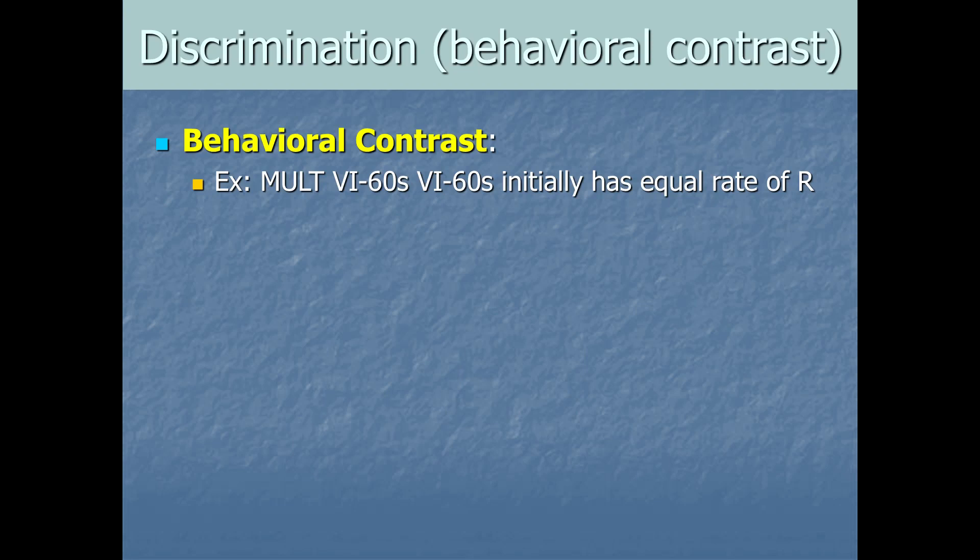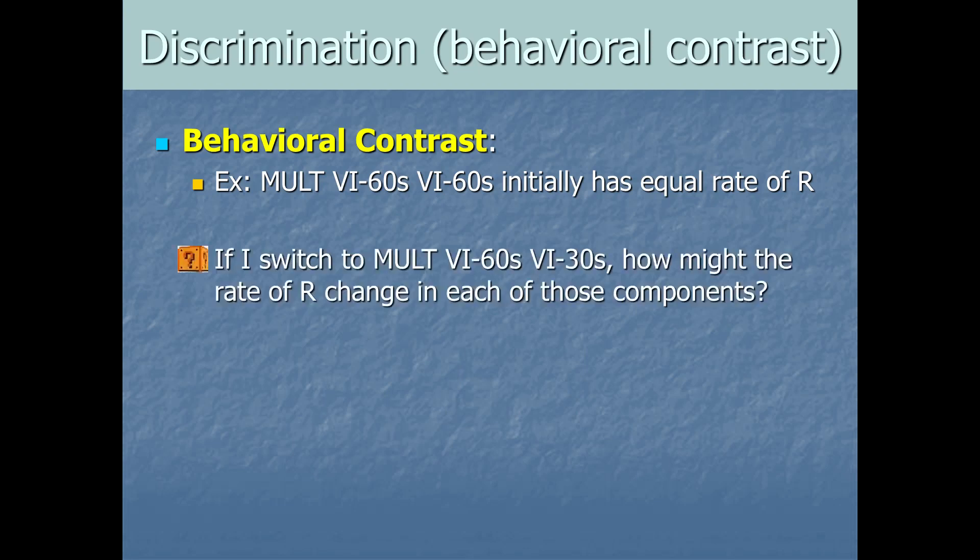We know from before that with a VI schedule like this, what kind of responding do we get? We get a nice consistent rate of responding. There's no post-reinforcer pause, just a consistent rate of responding. Nothing crazy. It's not a high rate like a VR schedule, but still it's consistent and steady. And actually because of this, VI schedules are used in a lot of behavior analysis studies because you can get a nice predictable baseline going. And then we can see what happens when you change some independent variable. Now, in this case, right, we've got a MULT VI-60, VI-60, where we're going to see a pretty equal rate of behavior during each of those schedules. Like during the hour of red light or the hour of blue light, they do a similar number of behaviors. The question for you is, if I switch to a MULT VI-60 second, VI-30 second setup, how might the rate of behavior change in each of those components? Pause the video, try and think it out.